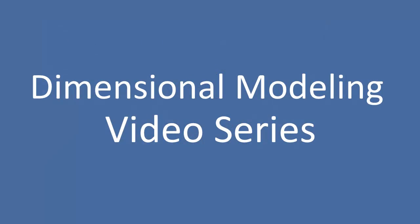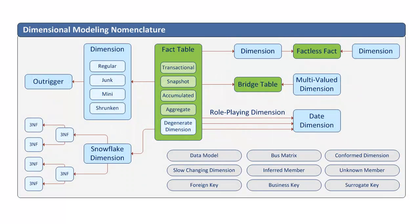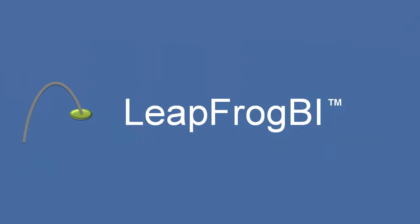So what are we going to be talking about in this video series? We'll be covering all things dimensional modeling — including many dimensions, junk dimensions, factless facts, inferred members, slowly changing dimensions, and more. Each of these concepts will be covered in bite-sized chunks so that at the end of this video series you have all the information you need to look at your source systems and create your own target data model. Thank you for listening — we'll see you in the next video.